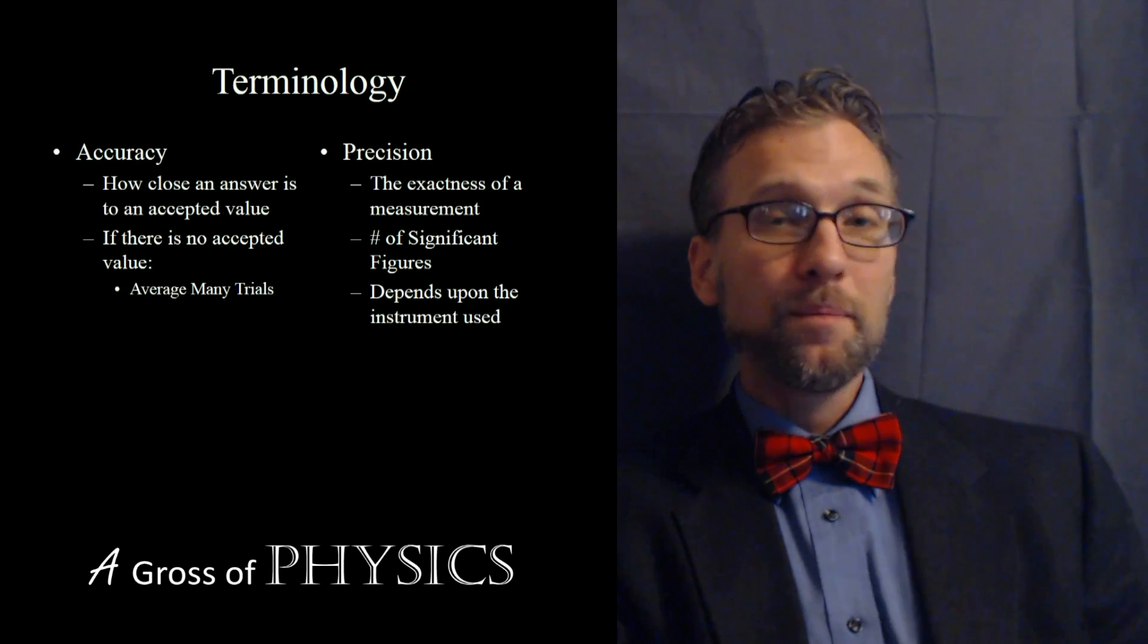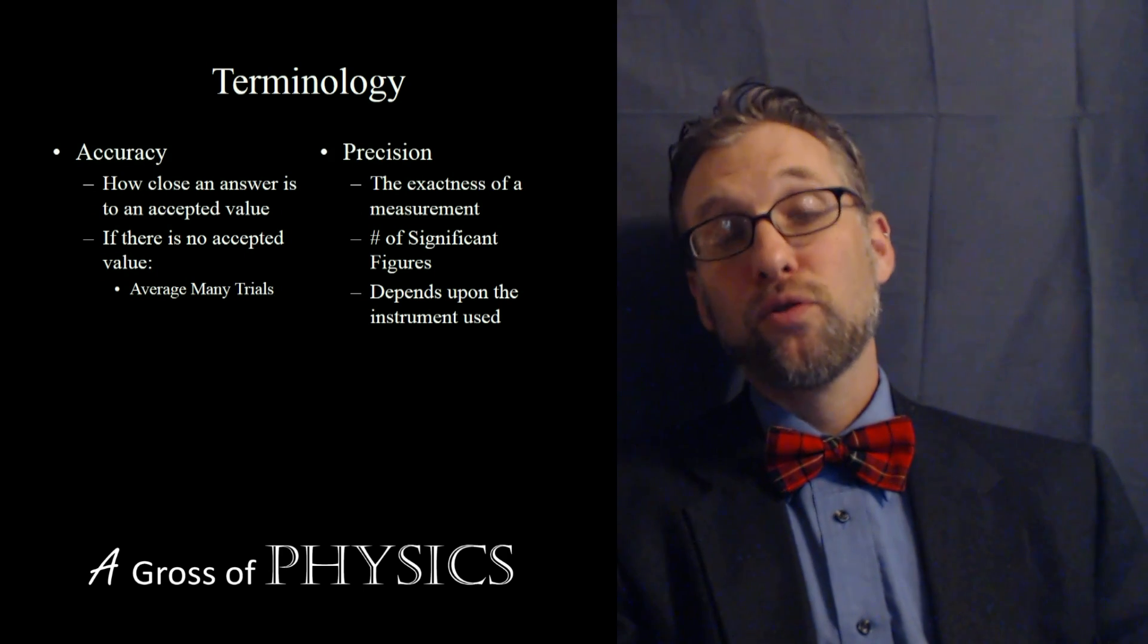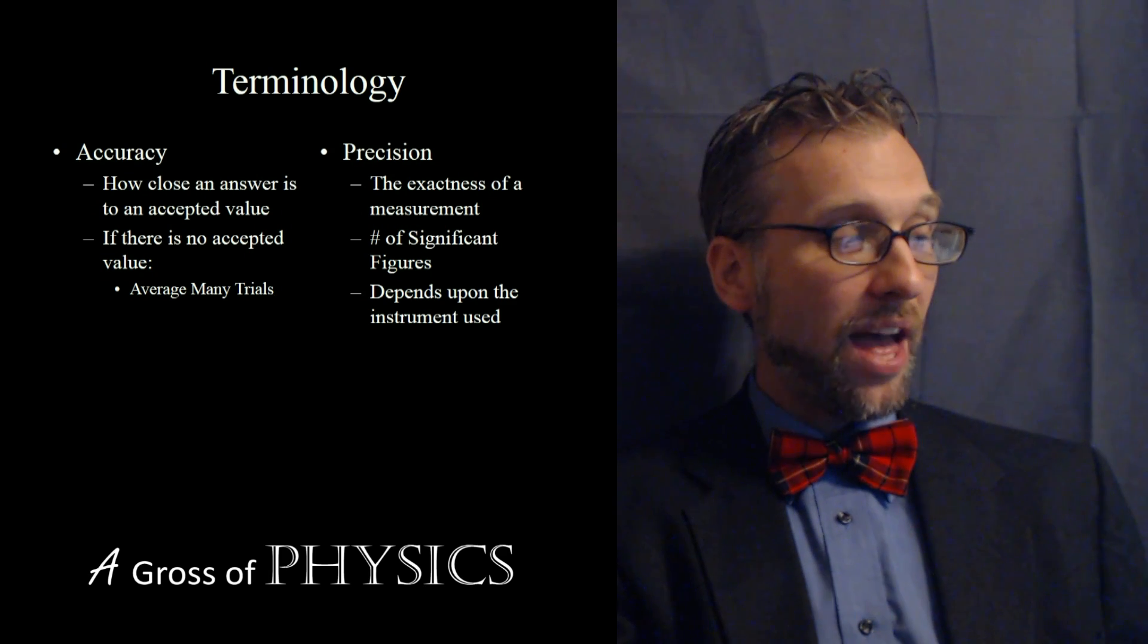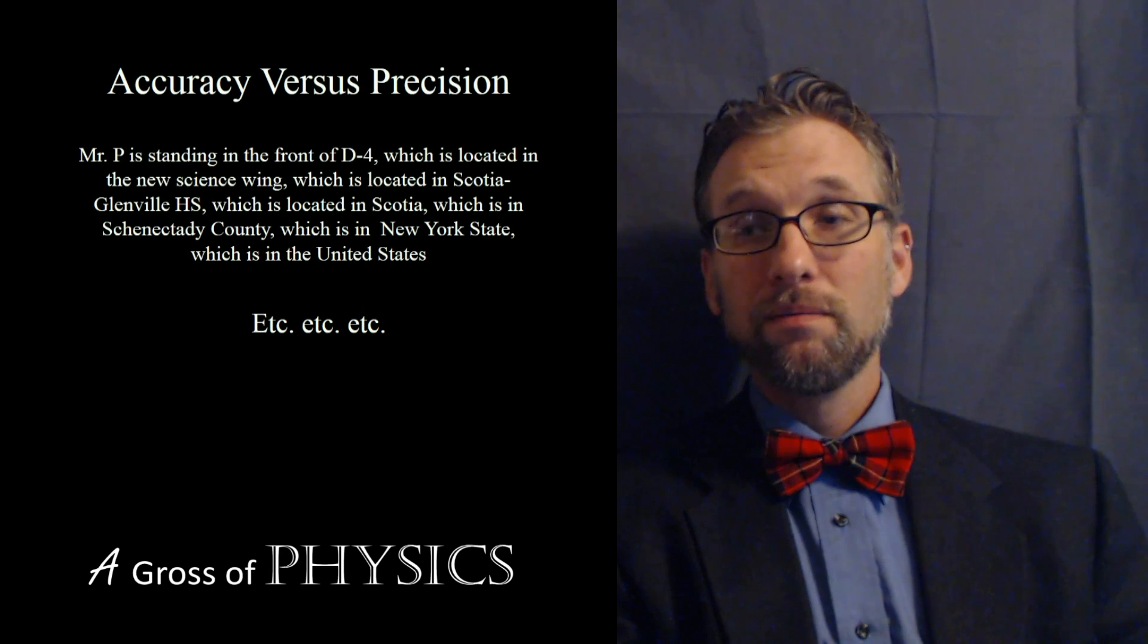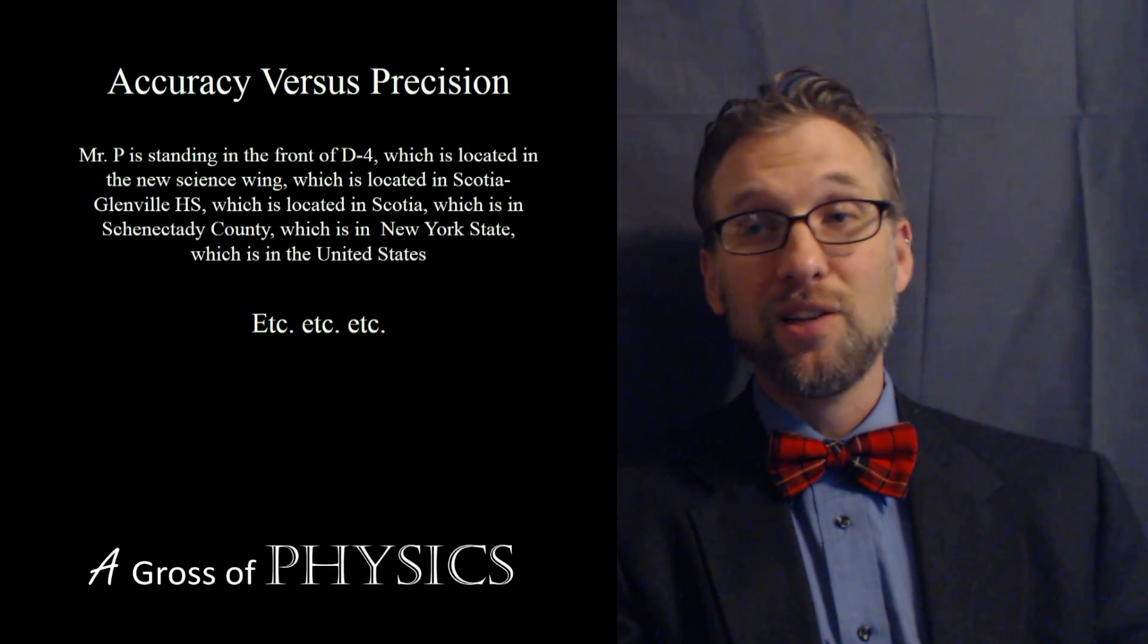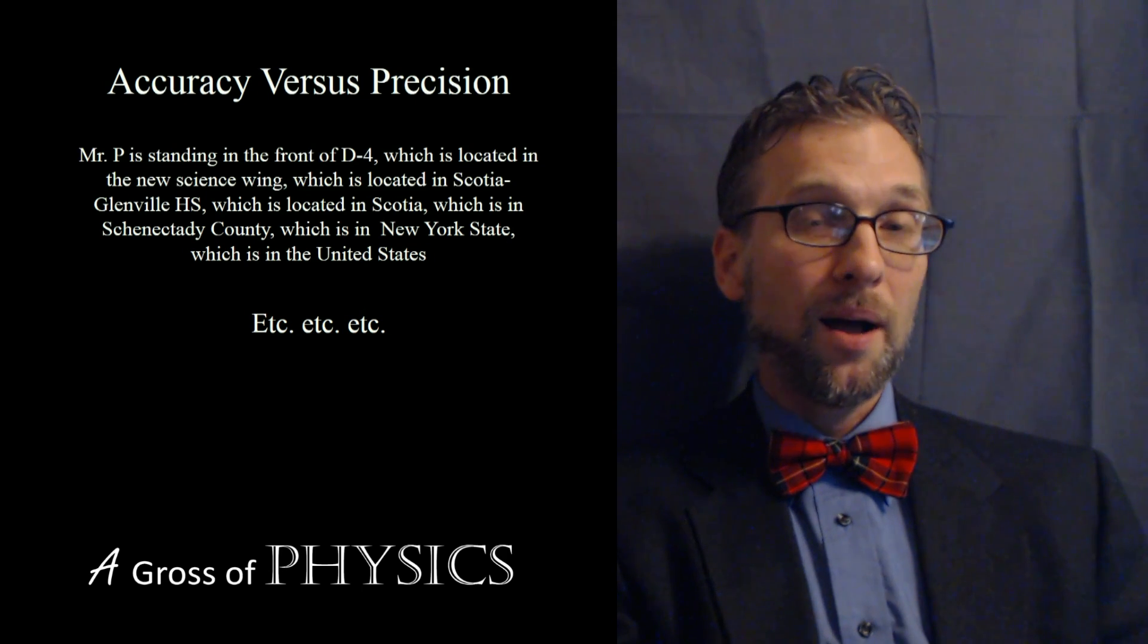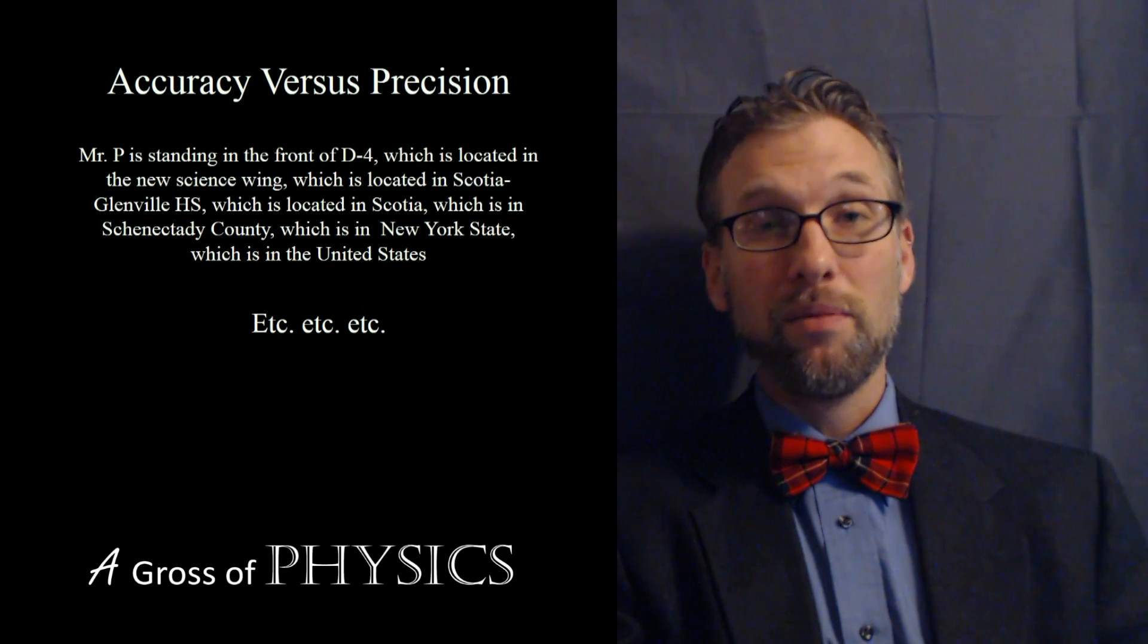Now, let me give you an example of accuracy versus precision. I typically use my classroom as a value for accuracy versus precision. And I say that, Mr. P, myself, I'm located in the United States. Now, that is an accurate value. I'm in the United States right now at my house. I'm in the United States when I'm in my classroom as well. Now, that may not be very precise because it's hard to locate me in the United States.